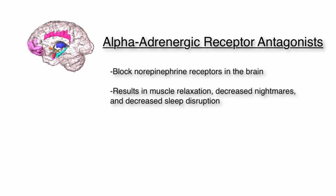Alpha-adrenergic receptor antagonists block the receptors for norepinephrine in the brain, causing there to be less norepinephrine acting. Norepinephrine is responsible for the fight-or-flight response often exhibited in episodes of PTSD. These drugs result in muscle relaxation, decreased nightmares, and decreased sleep disruption.